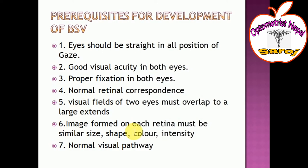The sixth prerequisite is that the image formed on each eye must be similar in size, shape, color, and intensity. The image on the left eye as well as the right eye must be of similar size, same color, and similar intensity, so that binocular single vision can occur. Also, a normal visual pathway must be present.